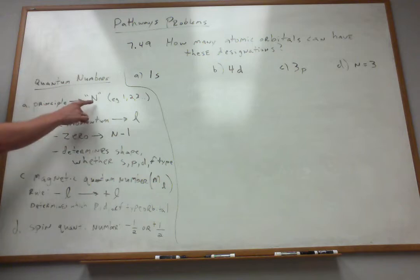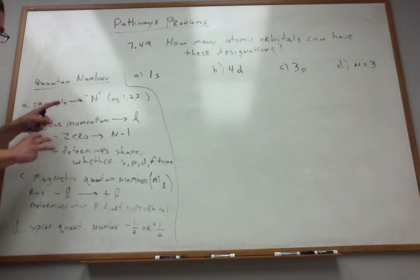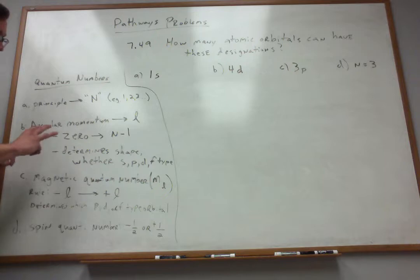So if the principal number, N, is 3, the values for the angular momentum quantum number, I could possibly assign 0 would be okay, 1 would be okay, and 2 would be okay. Those are the integers. But I can't go to 3 because I'm only allowed to go to N minus 1.